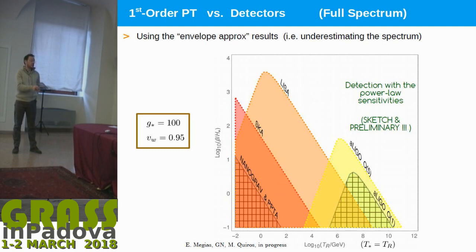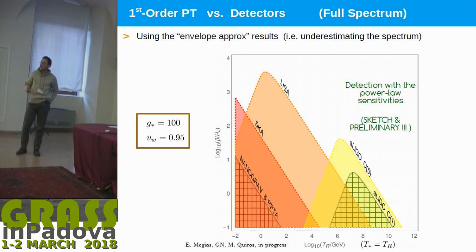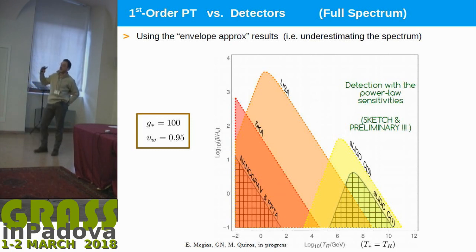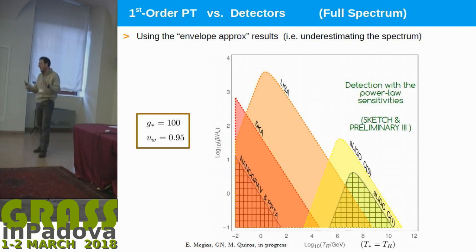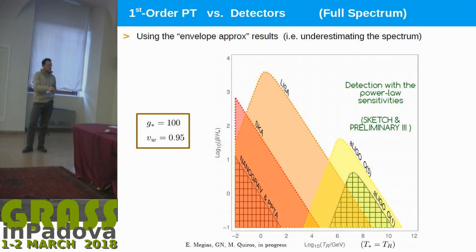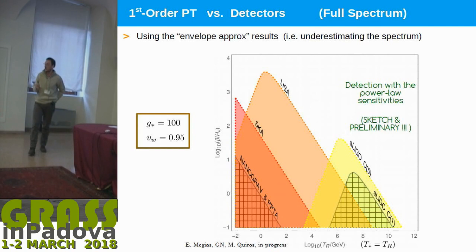The first talk was discussing this as well, but there is an issue: typically the collaborations consider a power law, whereas here we have a broken power law. Depending on the position of the peak, you cannot immediately apply the constraint. My impression is that what LIGO has seen is ruling out one area, and what PPTA and NANOGrav found is ruling out another area. In any case, it's an indicative constraint because you should run the analysis accounting for the fact that the spectrum is not a simple power law.